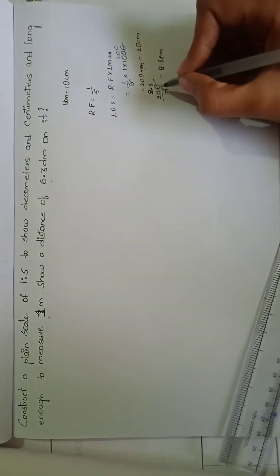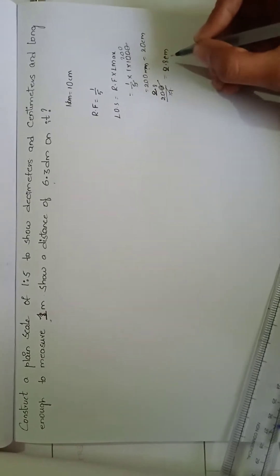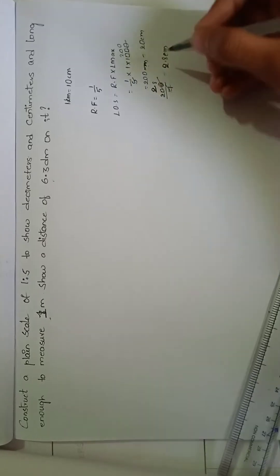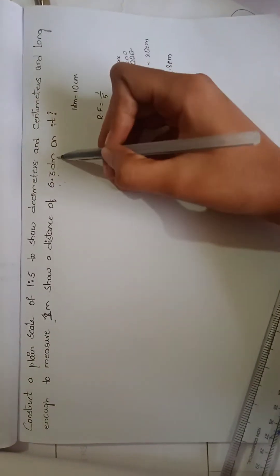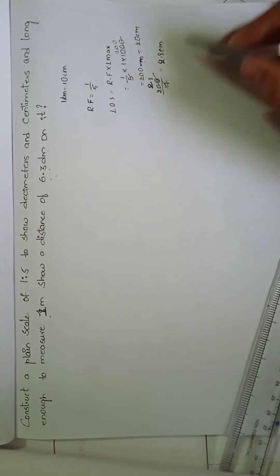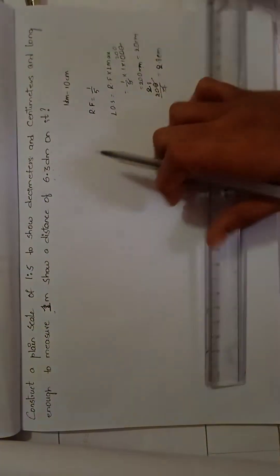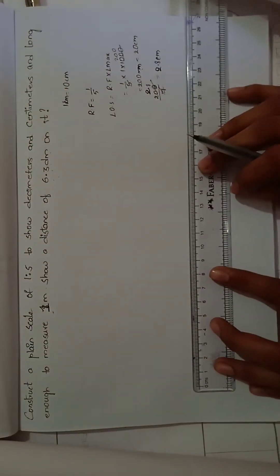Now when we divide this with 7, we get 2.8. We are dividing with 7 because here they ask to mark a distance of 6.3 decimeters. So we are dividing with 7.